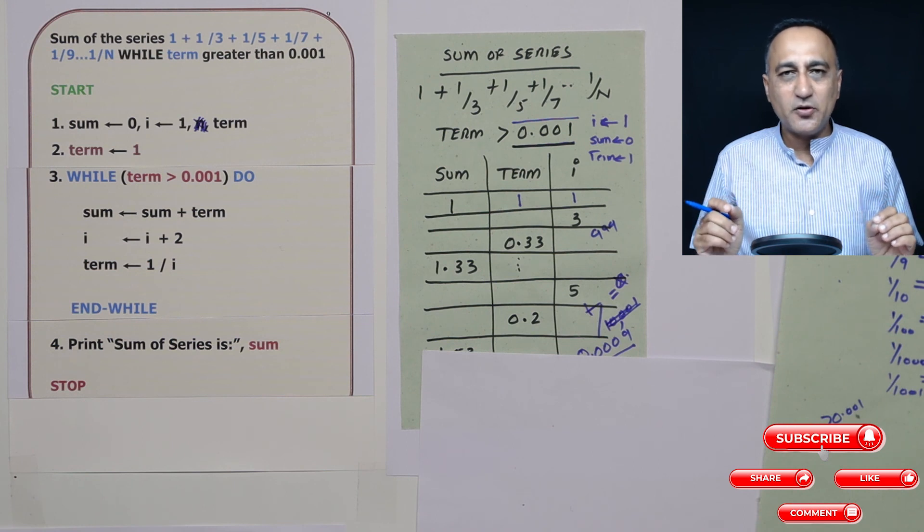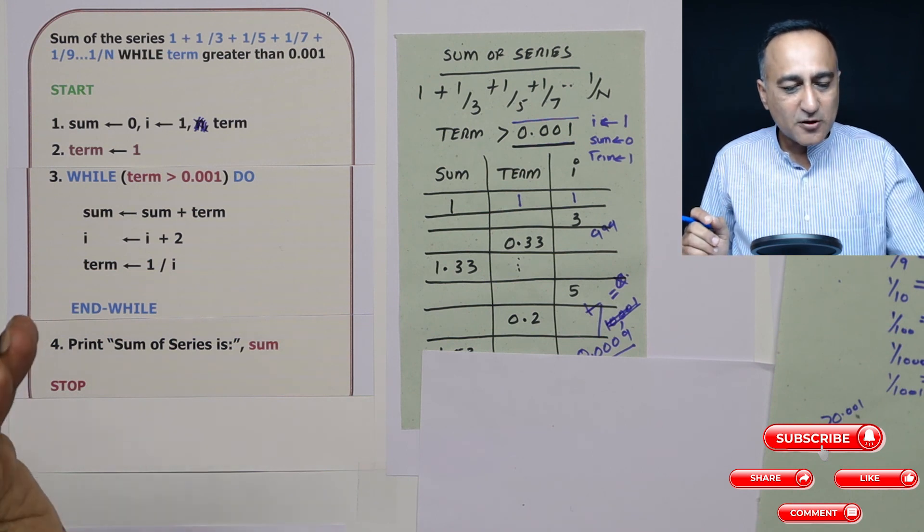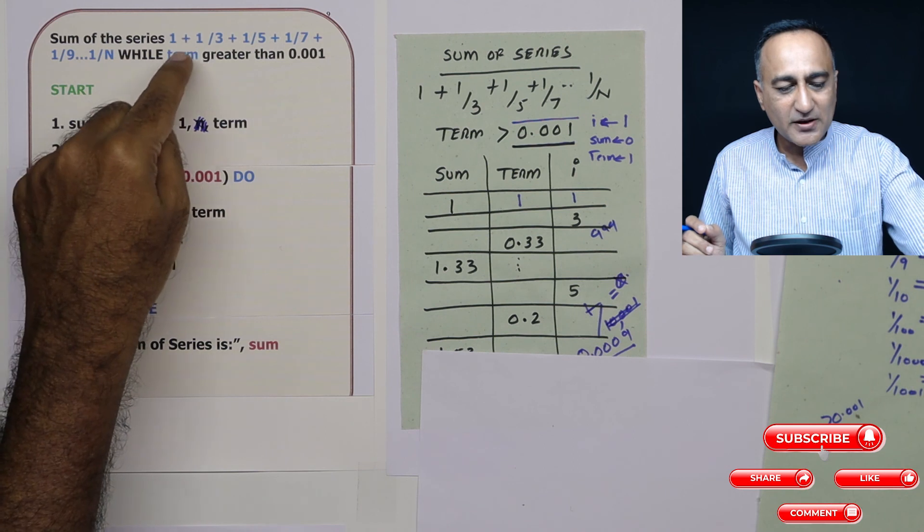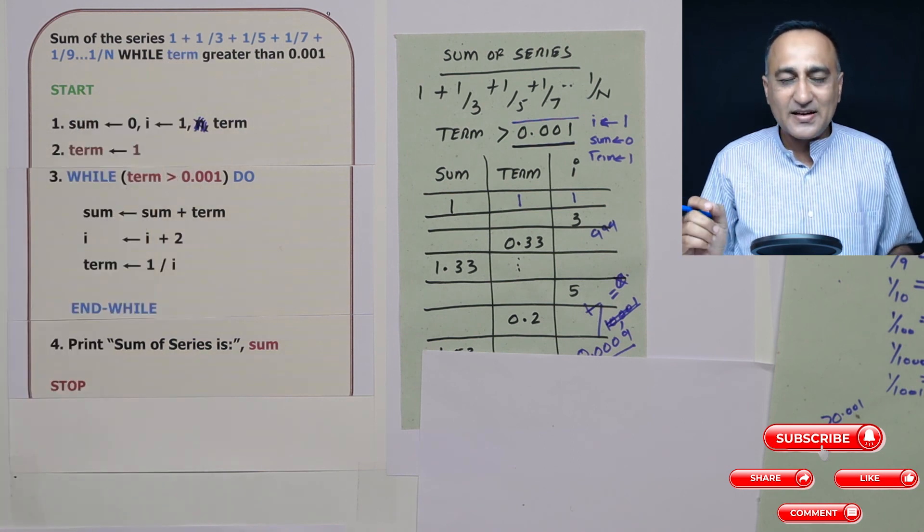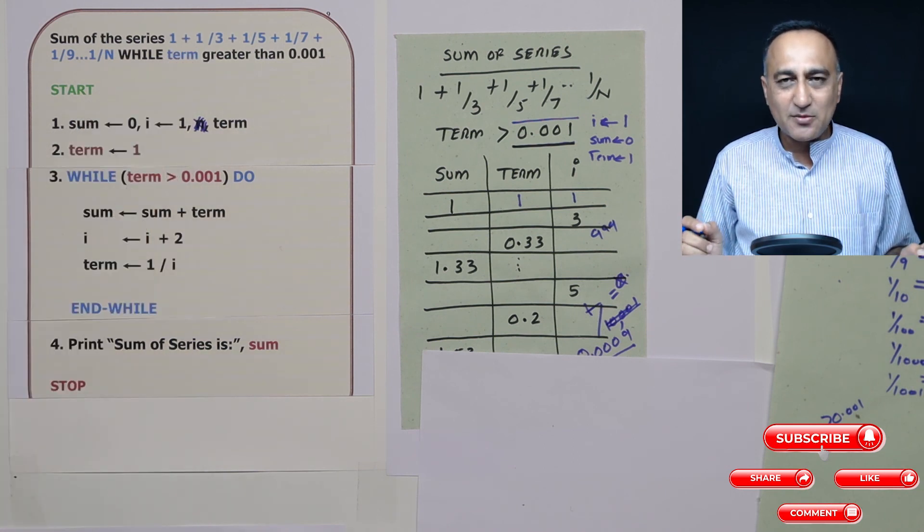I hope this logic is clear to you that we have used instead of n we have used the value of the individual term as the condition to find the sum of the series.